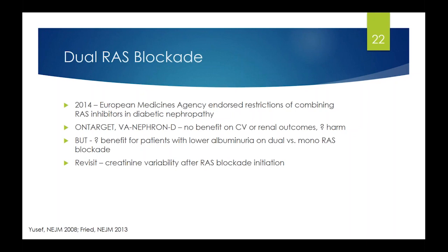Another topic that garnered much discussion was creatinine changes after starting a RAS inhibitor. There's a general rule of thumb that a 25% increase after starting an ACE or ARB is acceptable, but this isn't based on very strong data. Competing observational studies using large databases suggest even a 10% creatinine increase may be a harbinger of poorer outcomes. There's also newer literature examining longer-term creatinine variability, suggesting this topic should be revisited in future guidelines.